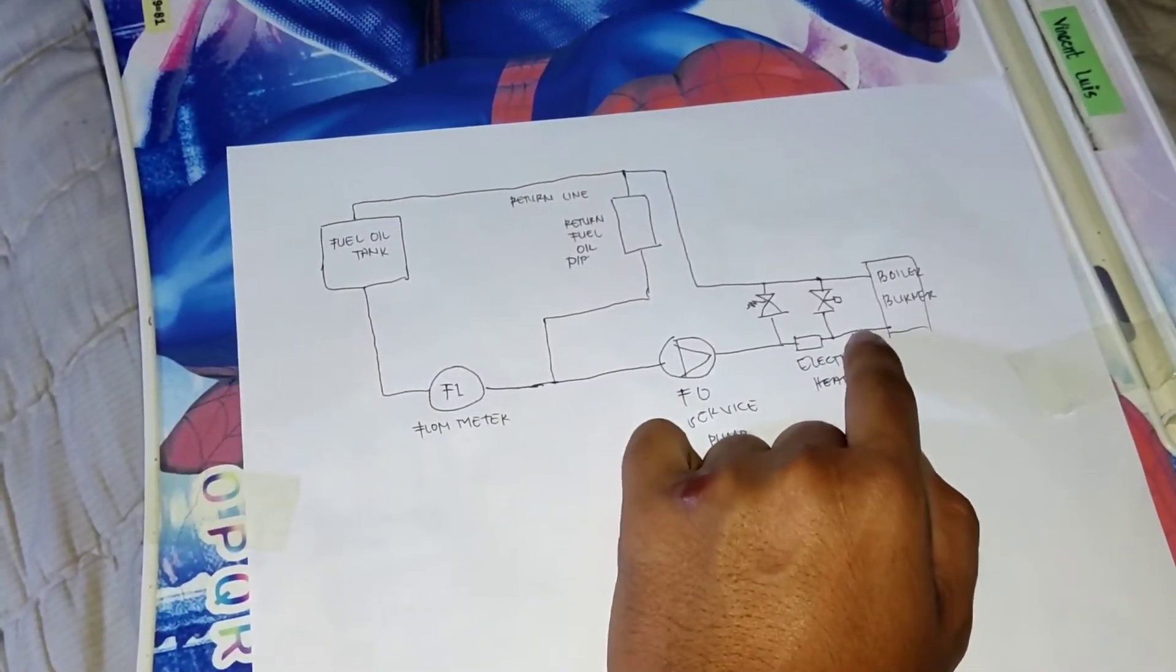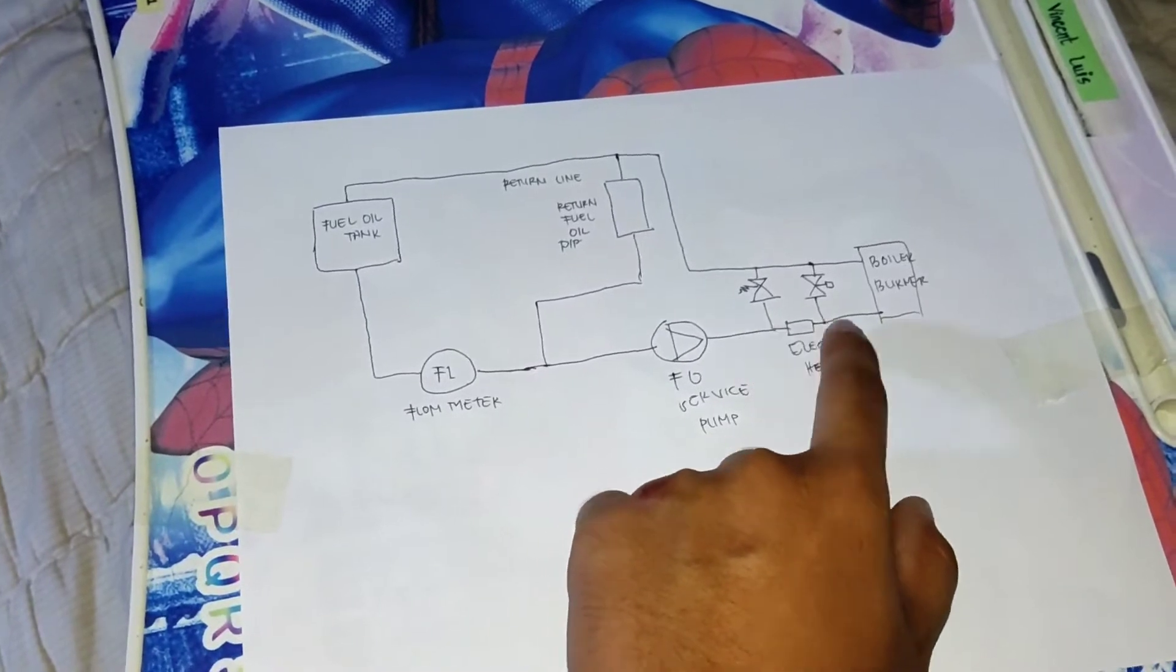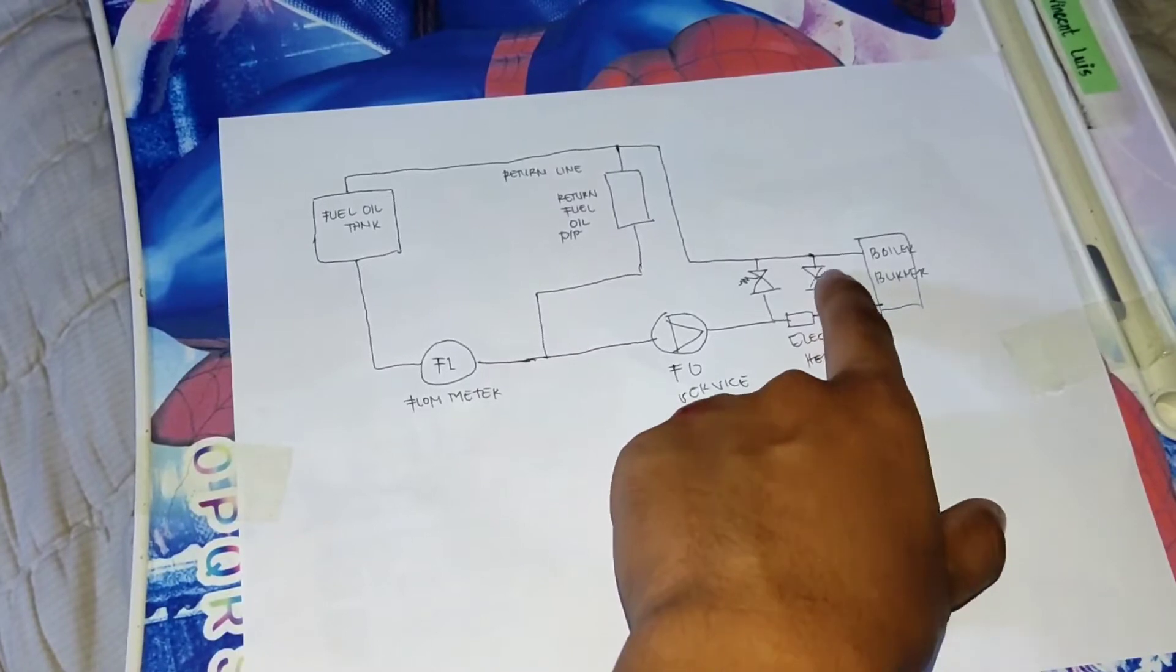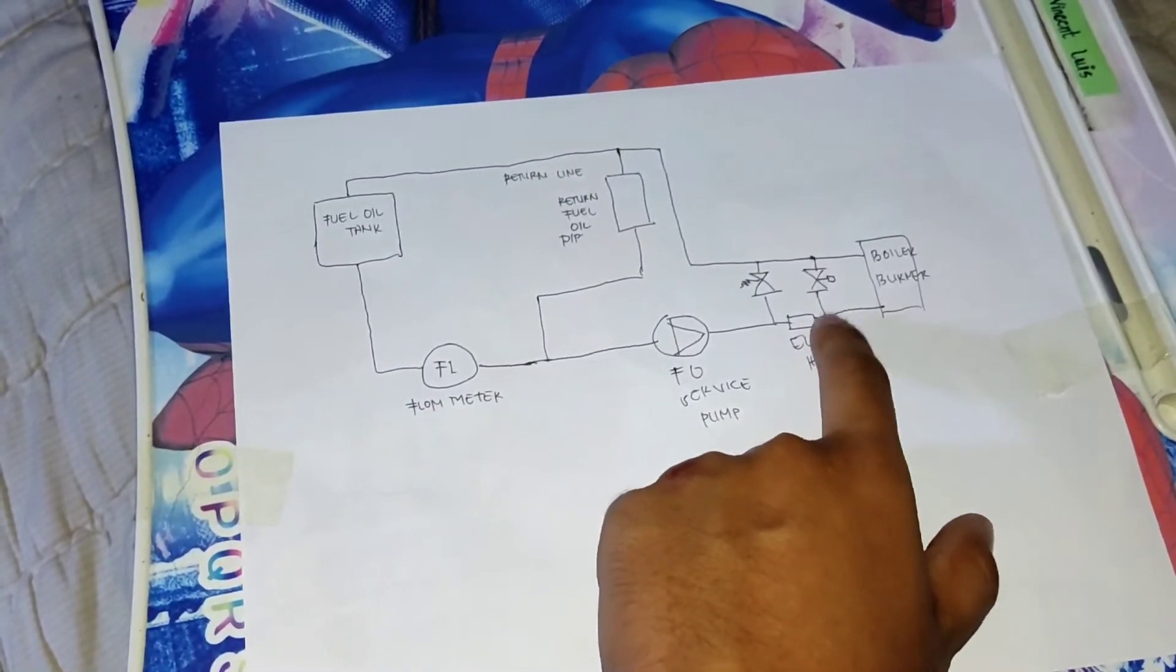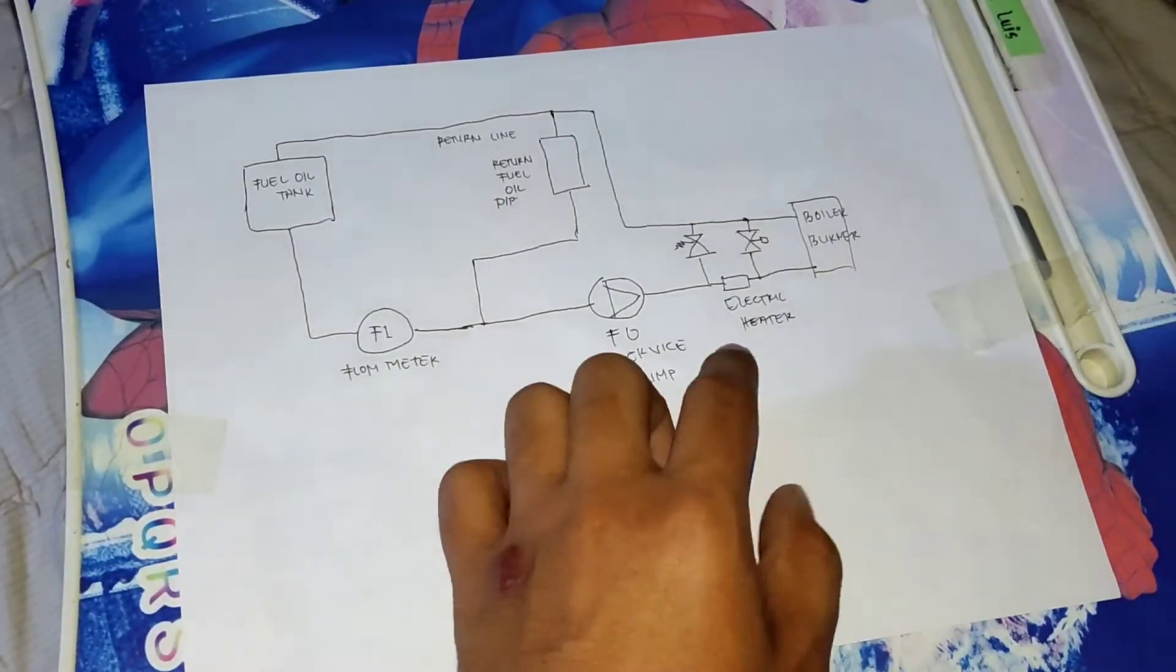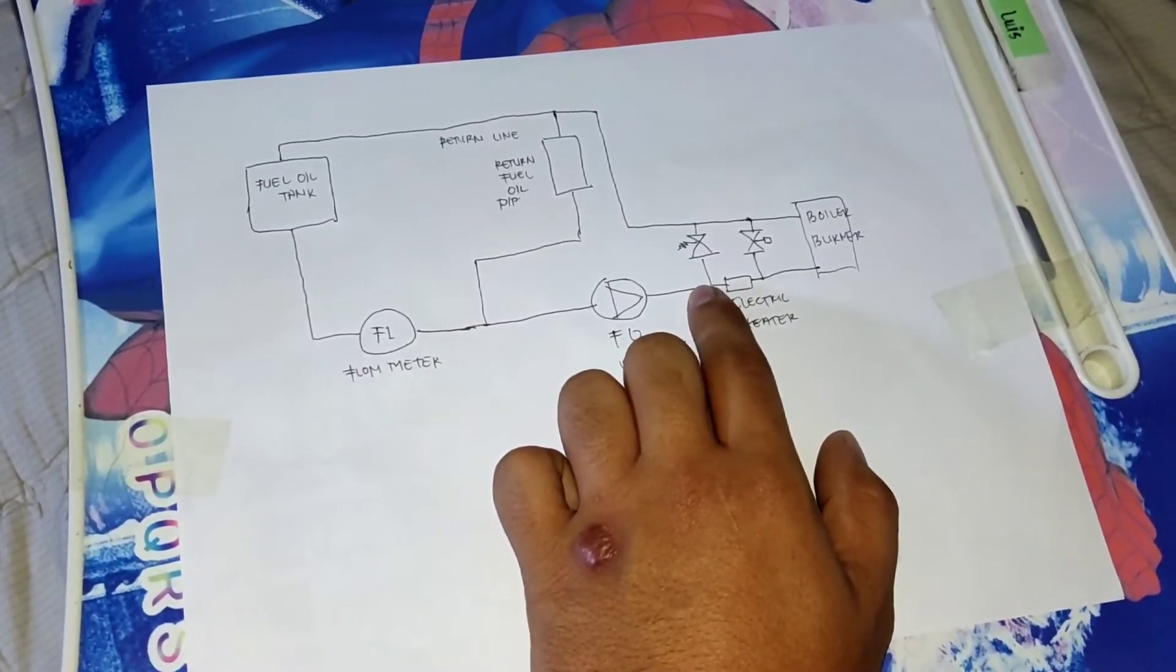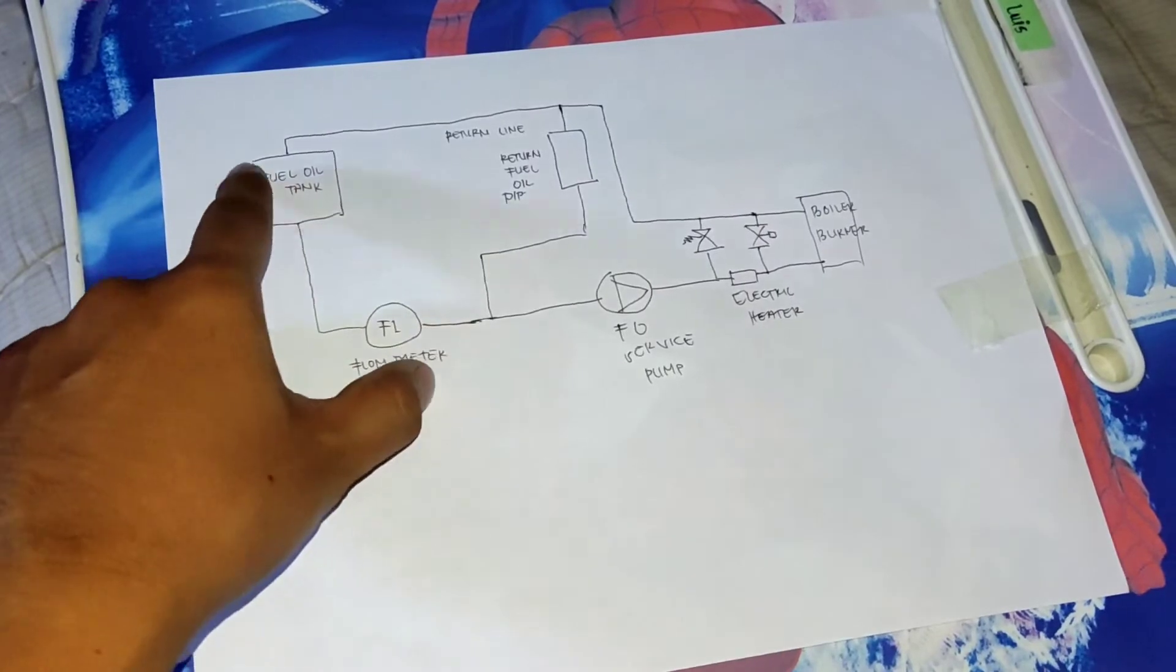So in this diagram shows here that we have a common line to the return line. These two valves is the solenoid valve and the relief valve. So mainly we use the solenoid valve in relieving the excess pressure. And in case of emergency, the solenoid valve is damaged, we have the backup valve here, also known as the relief valve. The relief valve also helps to relieve excess pressure returned to the fuel oil tank.